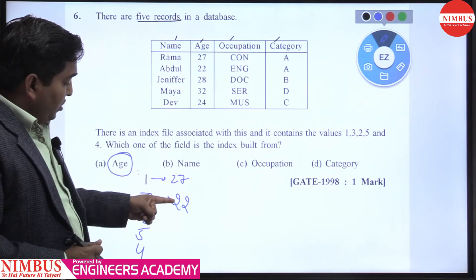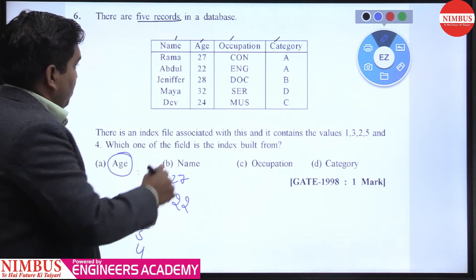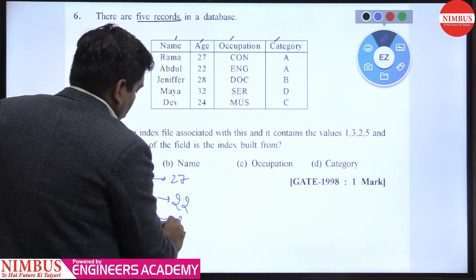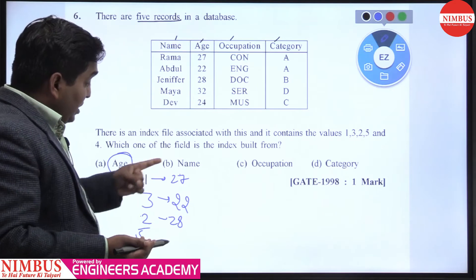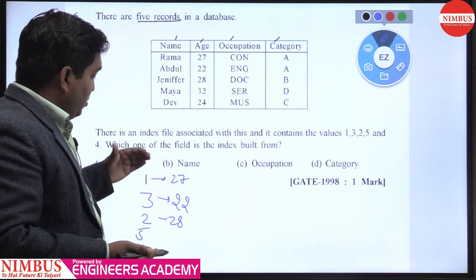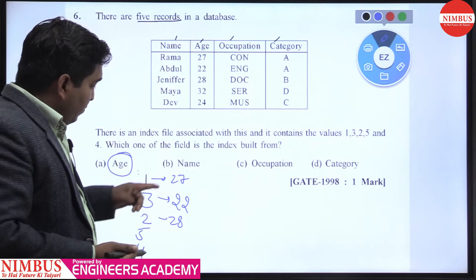But here we are getting 28, so you cannot find any relation. Because one is 27 and three is 22, meaning when the number increases from one to three, this decrements by 5.